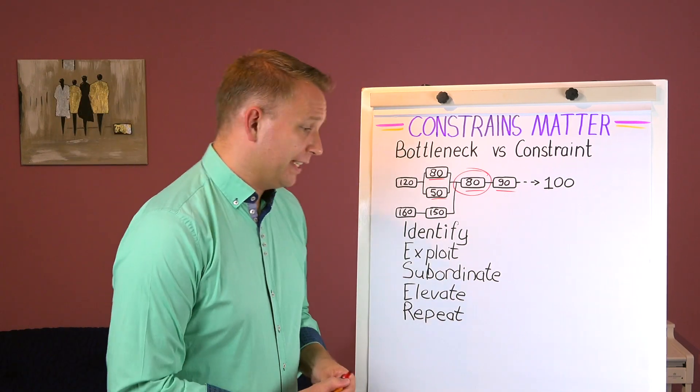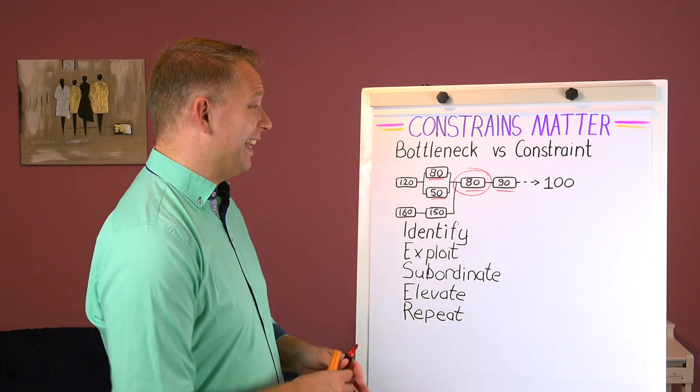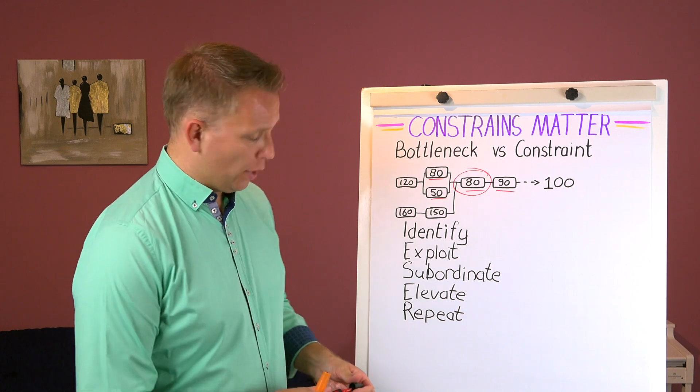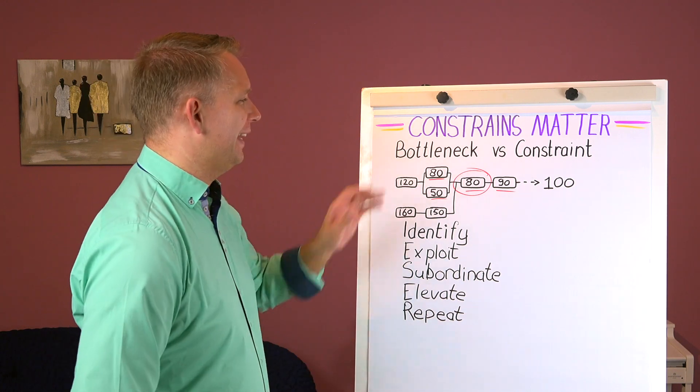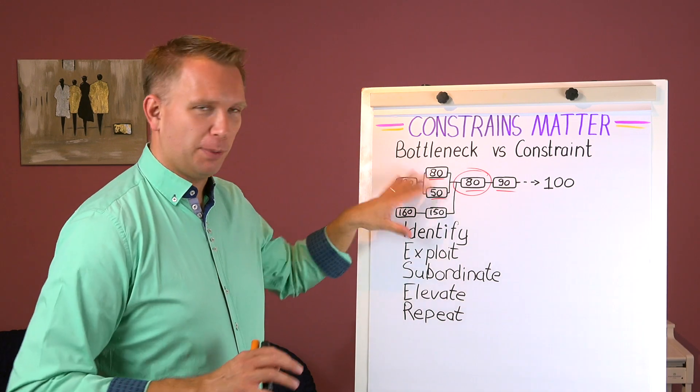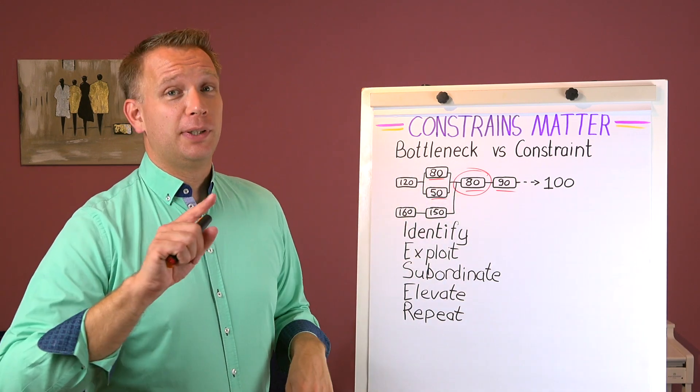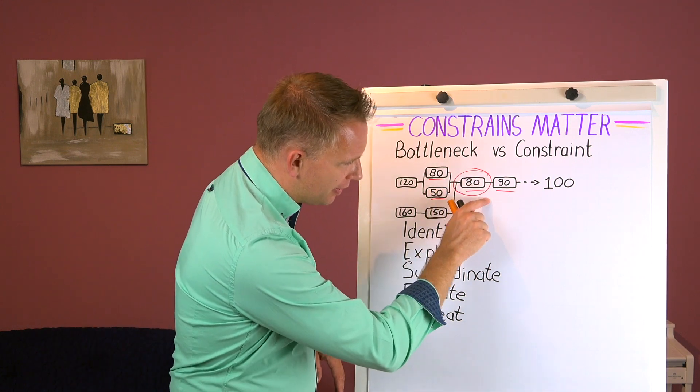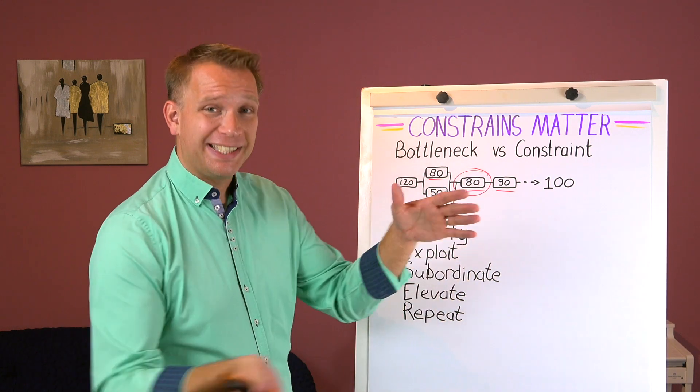The first thing to do is to identify where the constraint is, like we just did. We sort of already finished step one. In this one, of course in practice this is going to be a bit harder. You've got more complex production chains, you will maybe also have that after such a process it splits out.